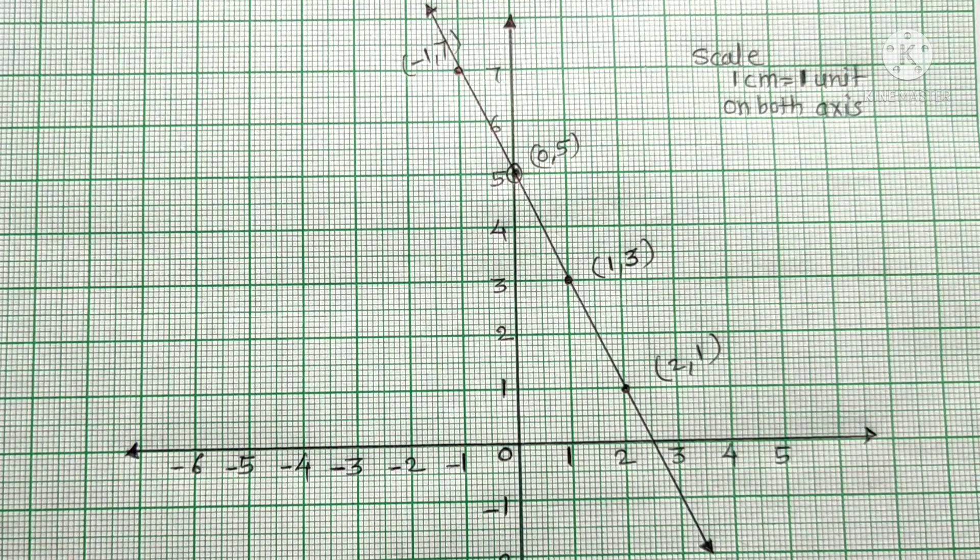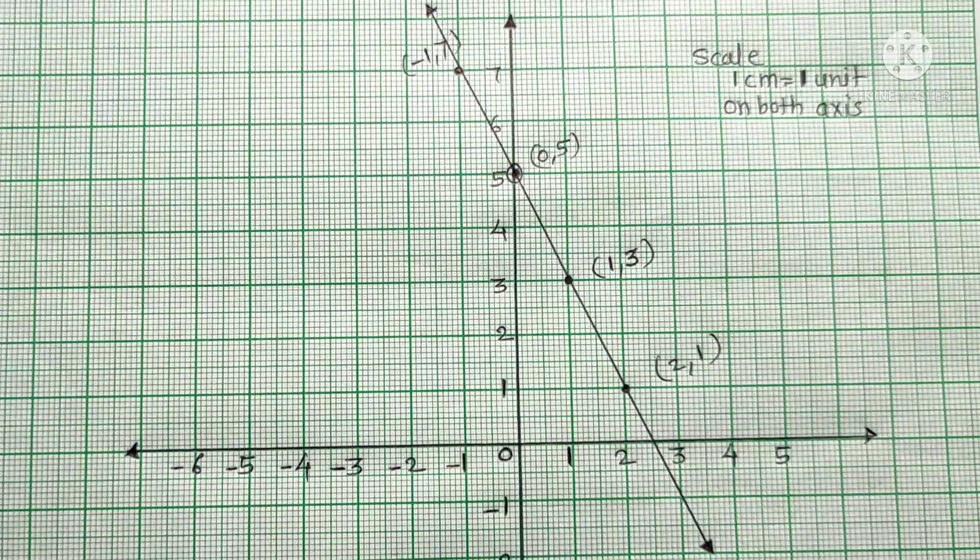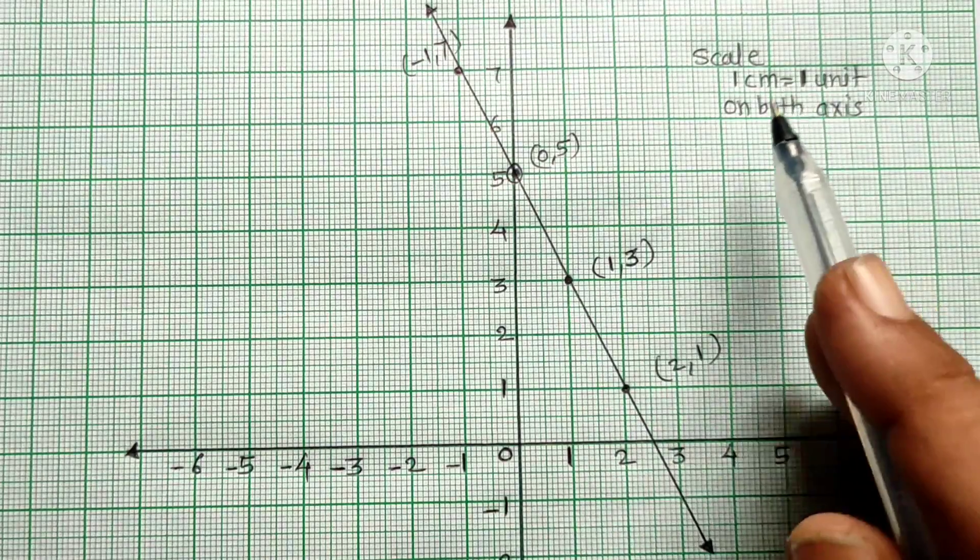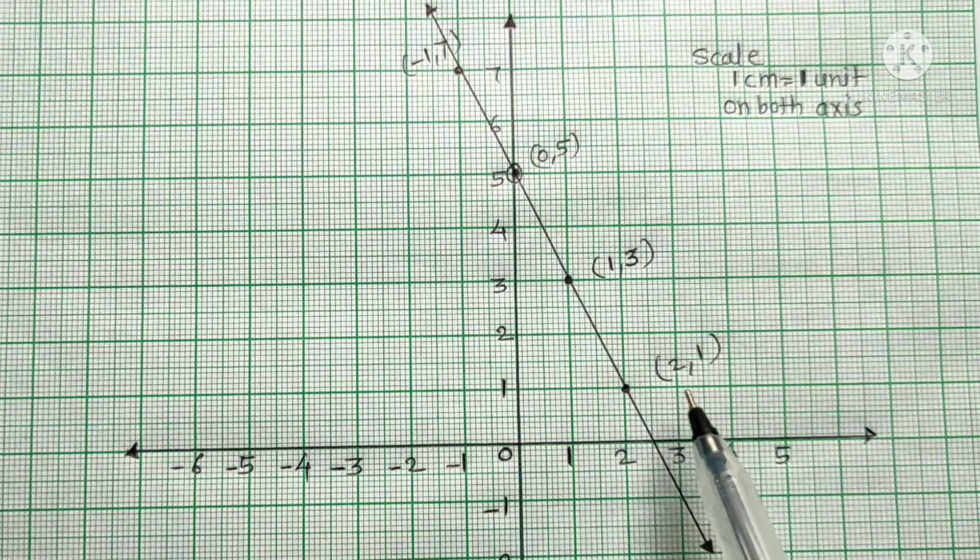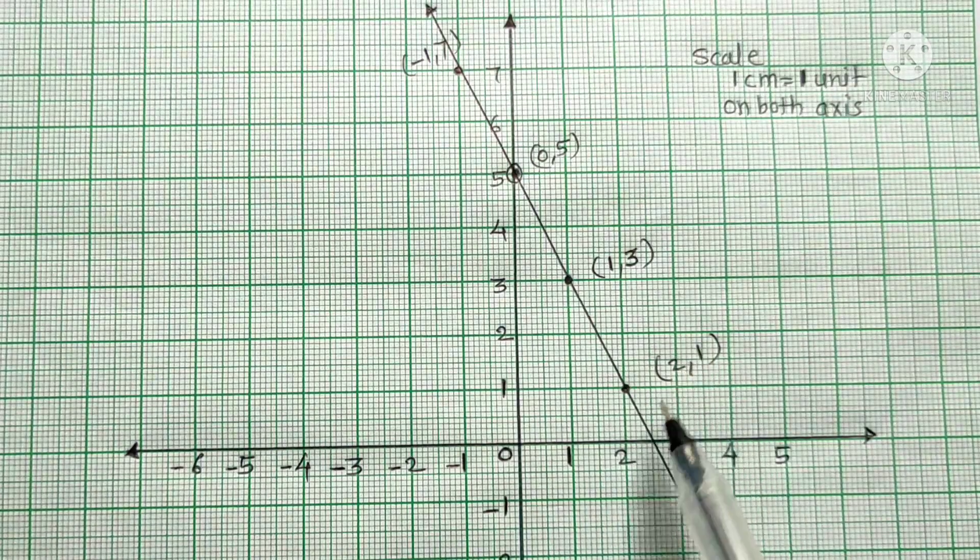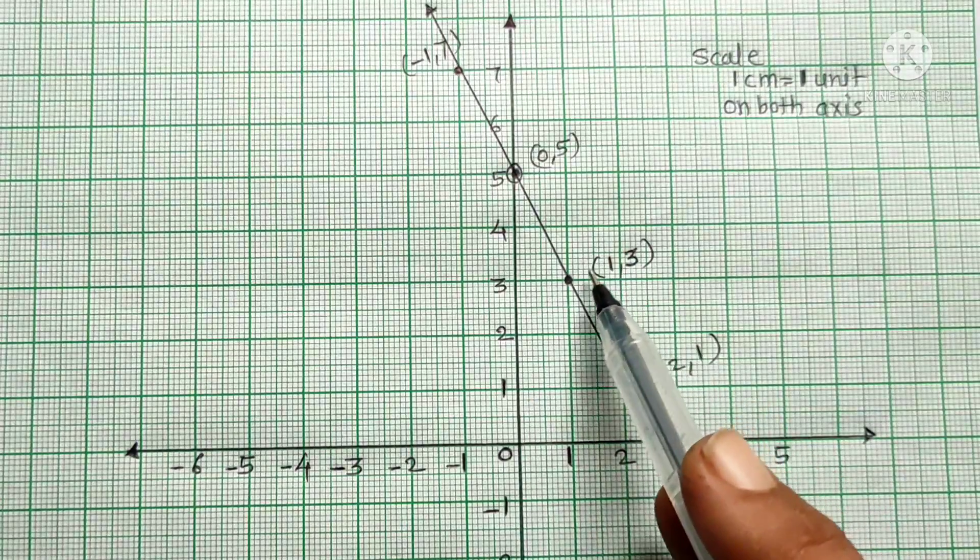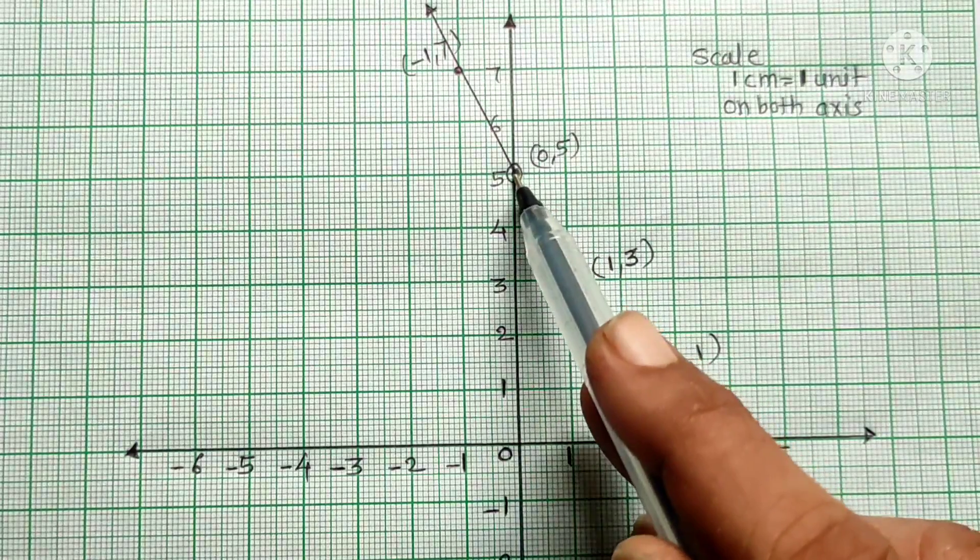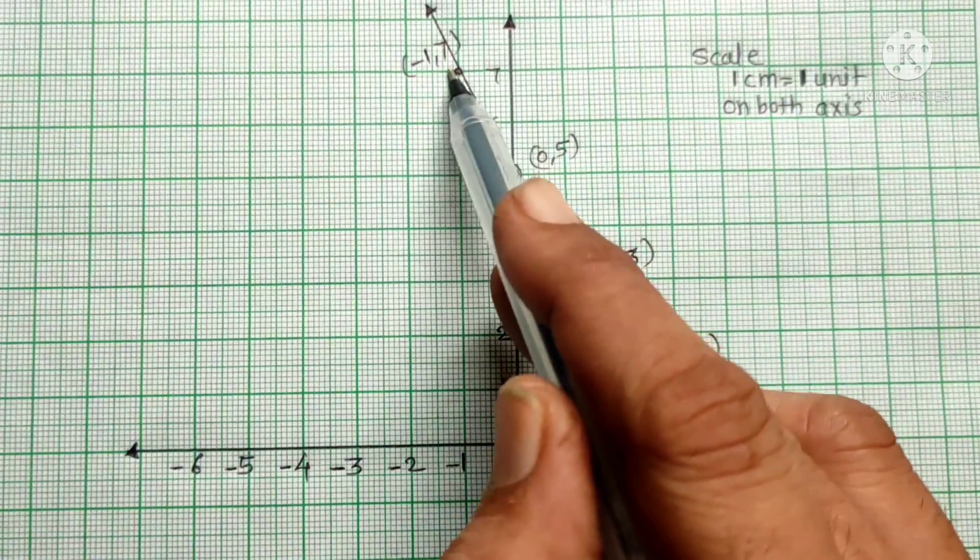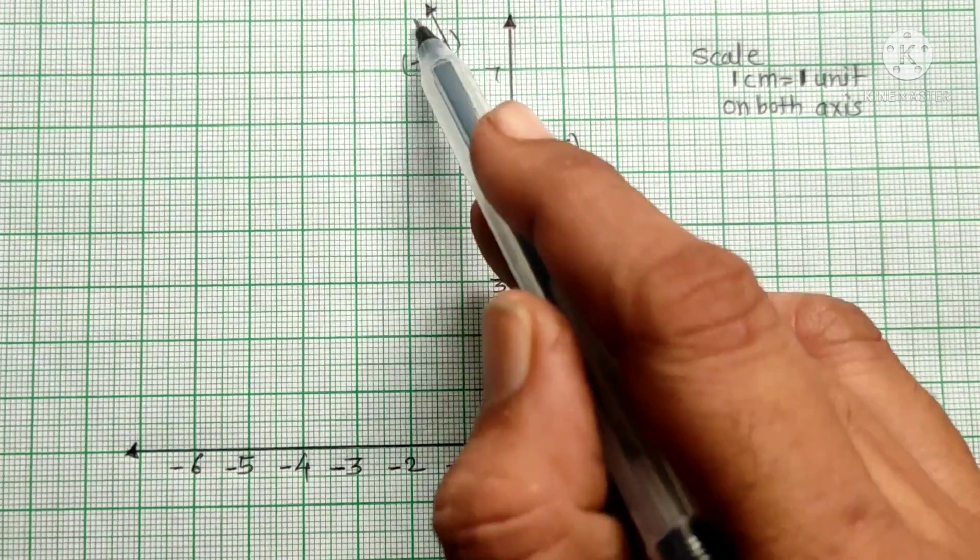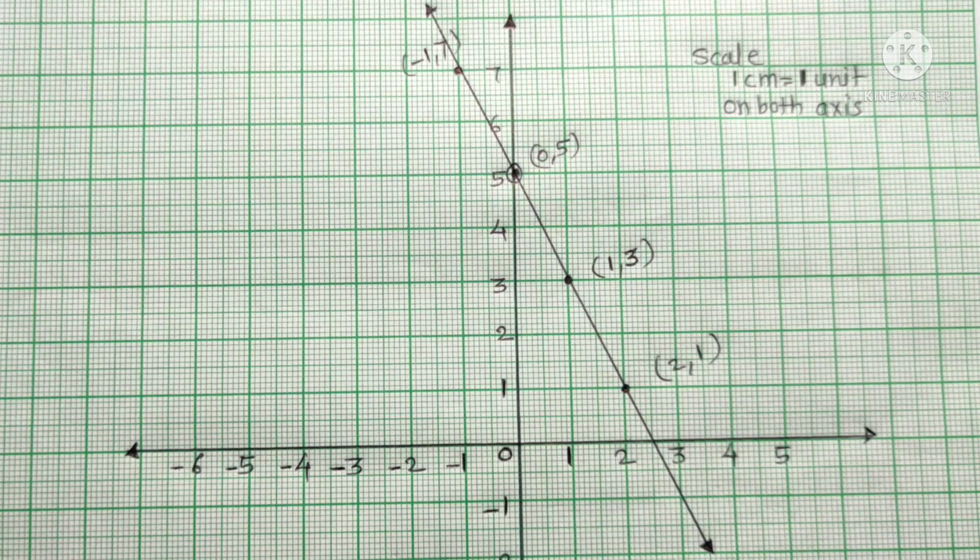2x plus y is equal to 5. We have the graph here. Question 3 part 2. We have x-axis and y-axis. In the table, we have 4 points to plot. 2 comma 1, then 1 and 3, then 0 comma 5 on the y-axis, then minus 1 comma 7. We have 4 points plotted and draw a line through them.